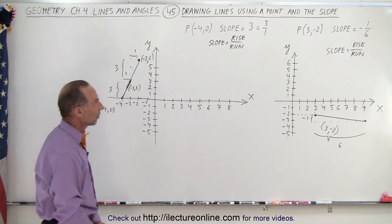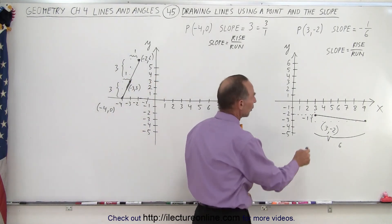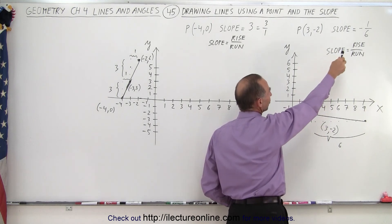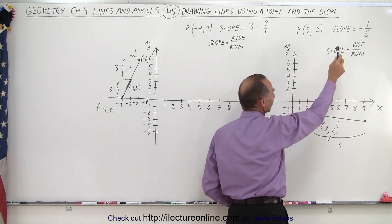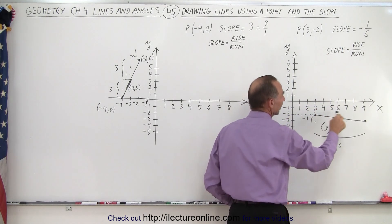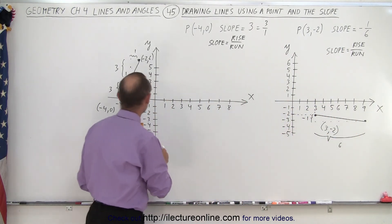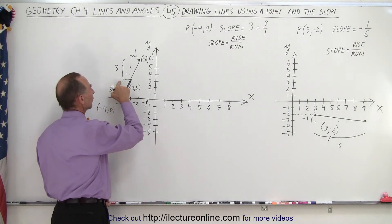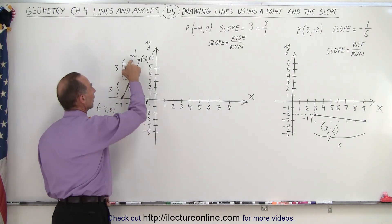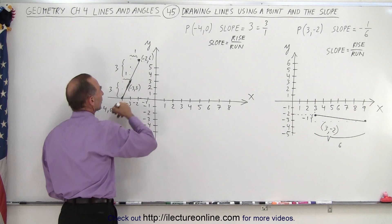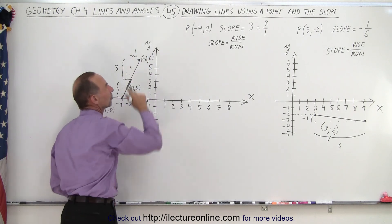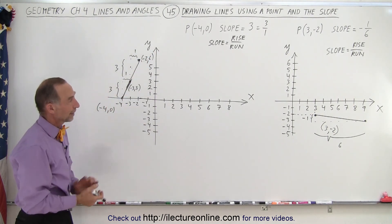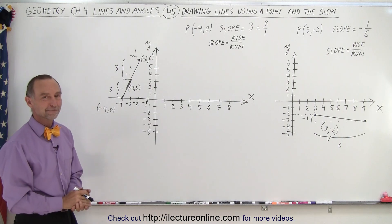So that's how we find our lines. We go to our first point that's given, and then we use the definition of slope — rise over run — to find the second point. We start with the point that was given, then we have a rise of 3 and a run of 1, repeated as needed, and then you have the line you're looking for. And that is how it's done.